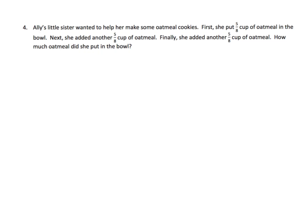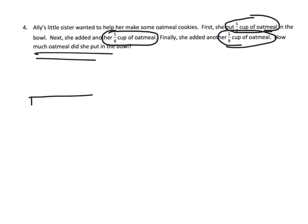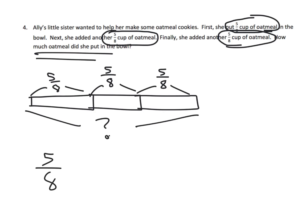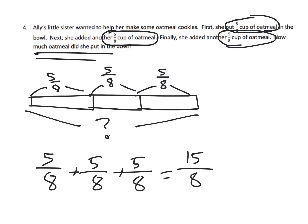I'll draw this picture but won't solve the problem. It says Ali's little sister wanted to help make oatmeal cookies. First she put five-eighths cup of oatmeal in the bowl, then added another five-eighths cup, and finally added another five-eighths cup. How much oatmeal did she put in the bowl? The picture shows three sections of five-eighths each, and we do five-eighths plus five-eighths plus five-eighths. That gives fifteen-eighths, but we're not done — we want to simplify that into a mixed number. I'll let parents and teachers solve the rest.